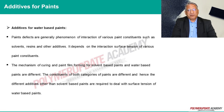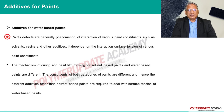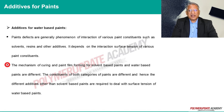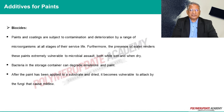Different additives are used for water-based paints. Paint defects are generally phenomena of interaction of various paint constituents such as solvents, resins, and other additives. It depends on the interaction and surface tension of various paint constituents. The mechanism of curing and paint film forming for solvent-based paints and water-based paints are different.